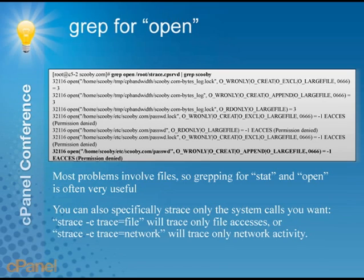There's actually another way you could do the same thing. One thing I find very useful with strace is to grep for 'open' or 'stat'. Nine times out of ten you're trying to find out where the program is getting some information — where is it trying to get this information, and why is it failing? Just grepping for 'open' or 'stat' in your strace output will tell you everything it's trying to look at. In this case you would run across the same error: it can't open the file — permission denied. There's your clue.